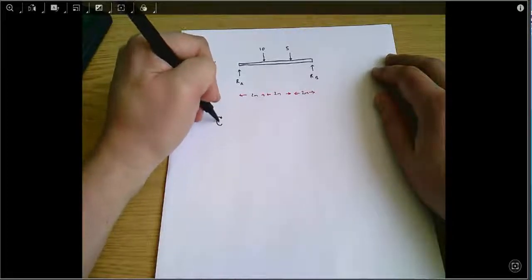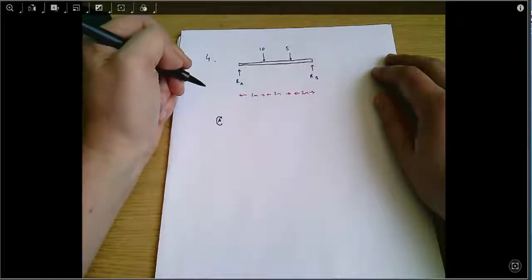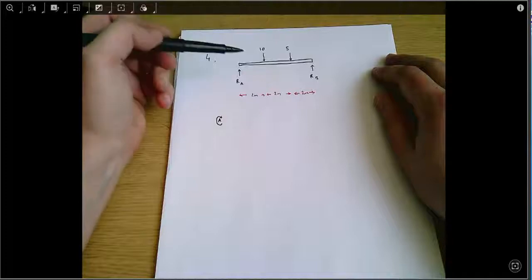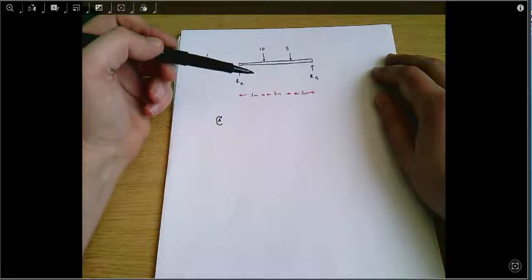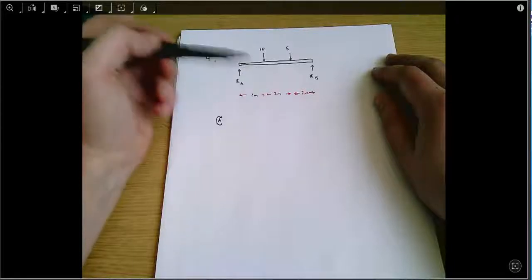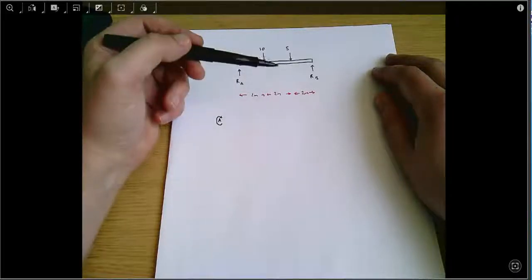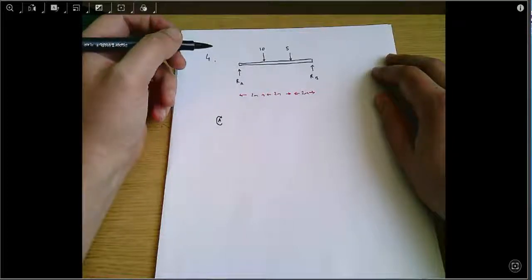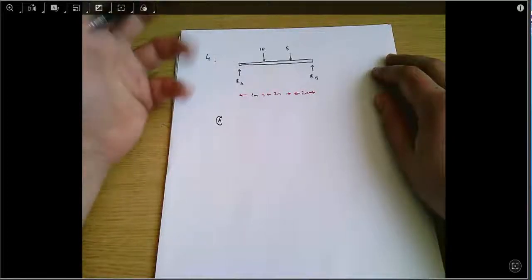So, taking moments about A clockwise, what we need to do is find the moments due to each of the forces in turn and then add them up. If we make clockwise forces positive and anti-clockwise forces negative, then together they should all add up to zero. And that's how moment equilibrium works.